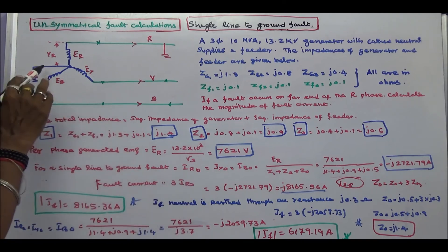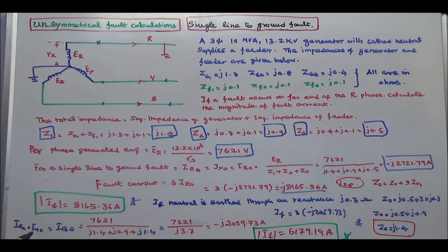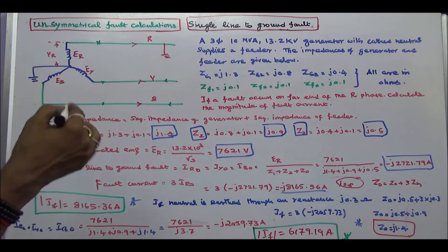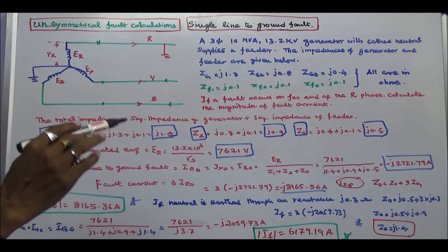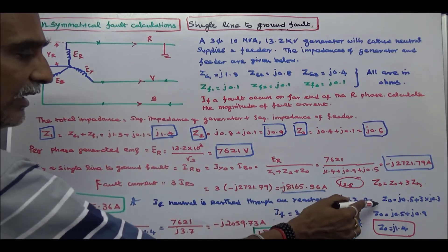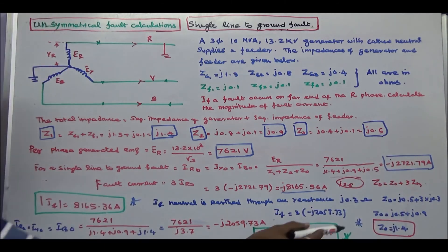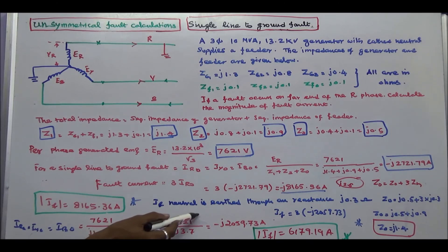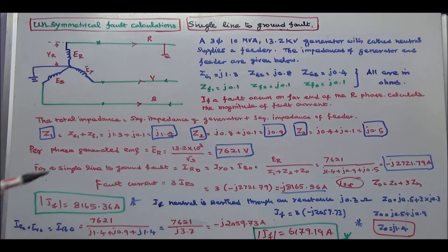The next question is: if the neutral is grounded through a reactance of J0.3 ohms, calculate the magnitude of fault current. Now the zero sequence current equals ER divided by (Z1 plus Z2 plus Z0 plus 3·Zn). Therefore Z0 becomes J0.5 plus 3 times J0.3, so Z0 equals J1.4. Therefore the zero sequence current equals 7621 divided by (J1.4 plus J0.9 plus J1.4), which is 7621 divided by J3.7, equal to −J2059.73 Amps. Fault current IF equals 3 times zero sequence current; the magnitude of fault current is 6179.19 Amps.